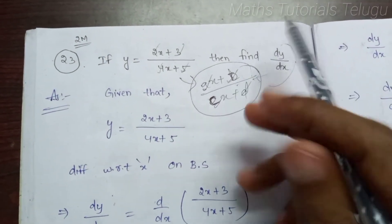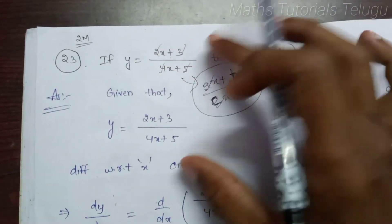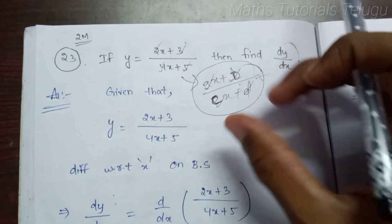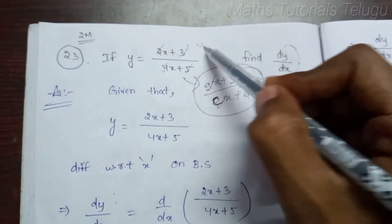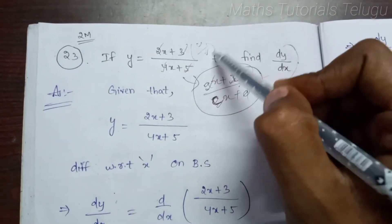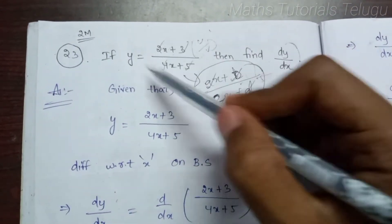If you want to have a better understanding, I will explain it as well. So here, the U by V form — we apply the quotient rule.